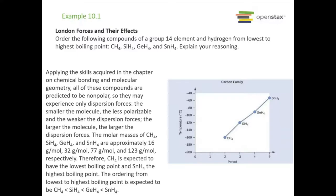Let's look at an example about London forces and their effects. We want to order the following compounds of group 14 elements and hydrogen from lowest to highest boiling point: CH4, SiH4, GeH4, and SnH4, and explain our reasoning. These are all group 14 elements — going down the periodic table: carbon, then silicon, then germanium, then tin.